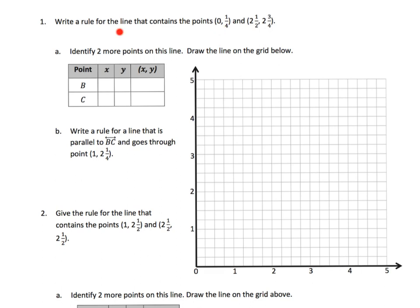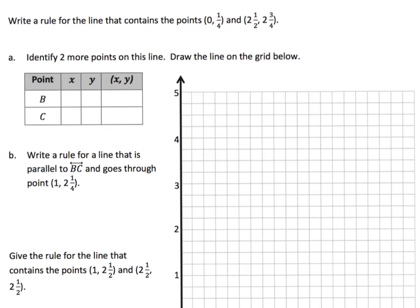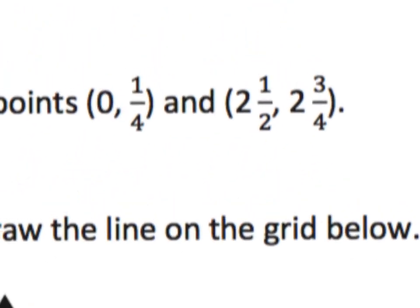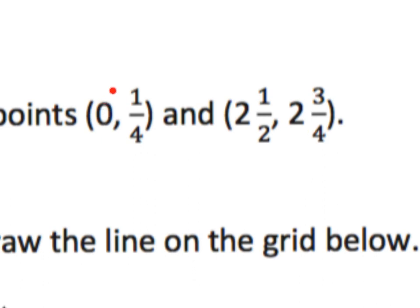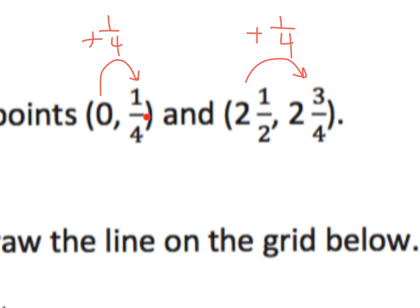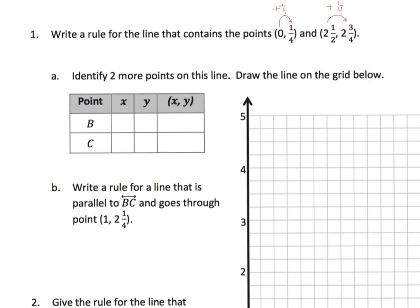We're supposed to write a rule for a line that contains these two points. So let's zoom in on those two points. To go from zero to a quarter, that gets bigger by one-fourth. And if I look over here, two and a half, add a quarter — so if I add one-fourth, that gives me two and three-quarters. If I go from zero and add one-fourth, that gives me one-fourth. So the rule is: take your x value and add one-fourth, and that gives you your y value. So we write it as: take your x value, add one-fourth, and that gives you your y value.